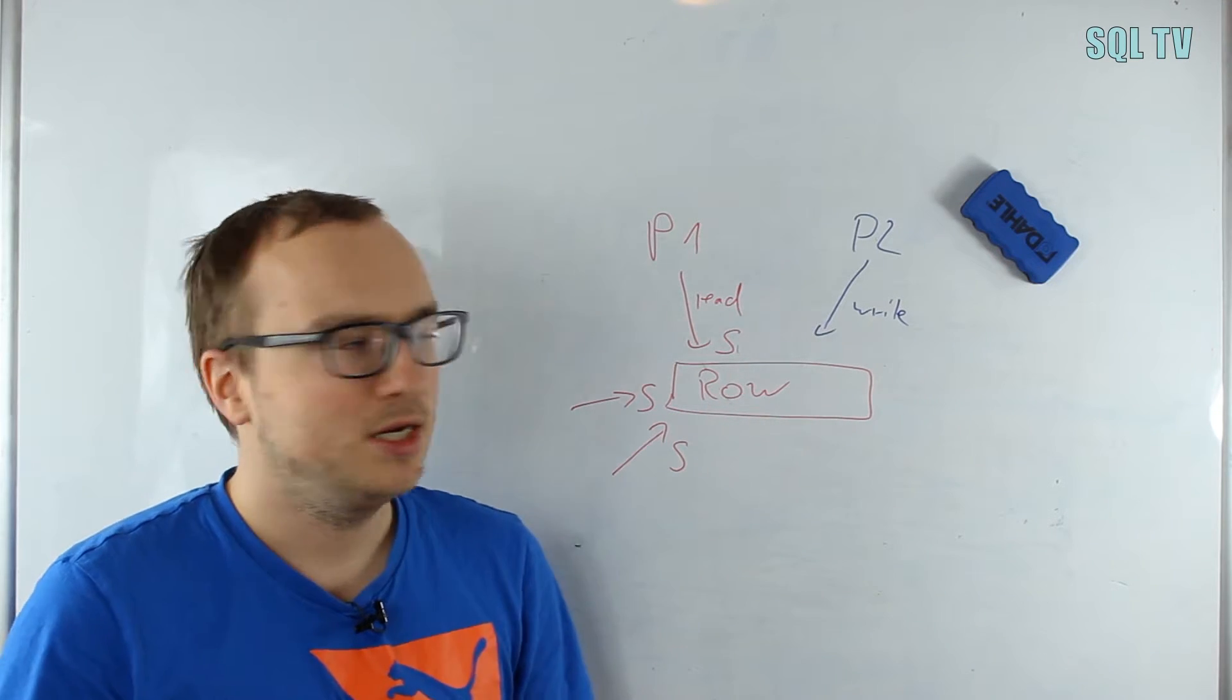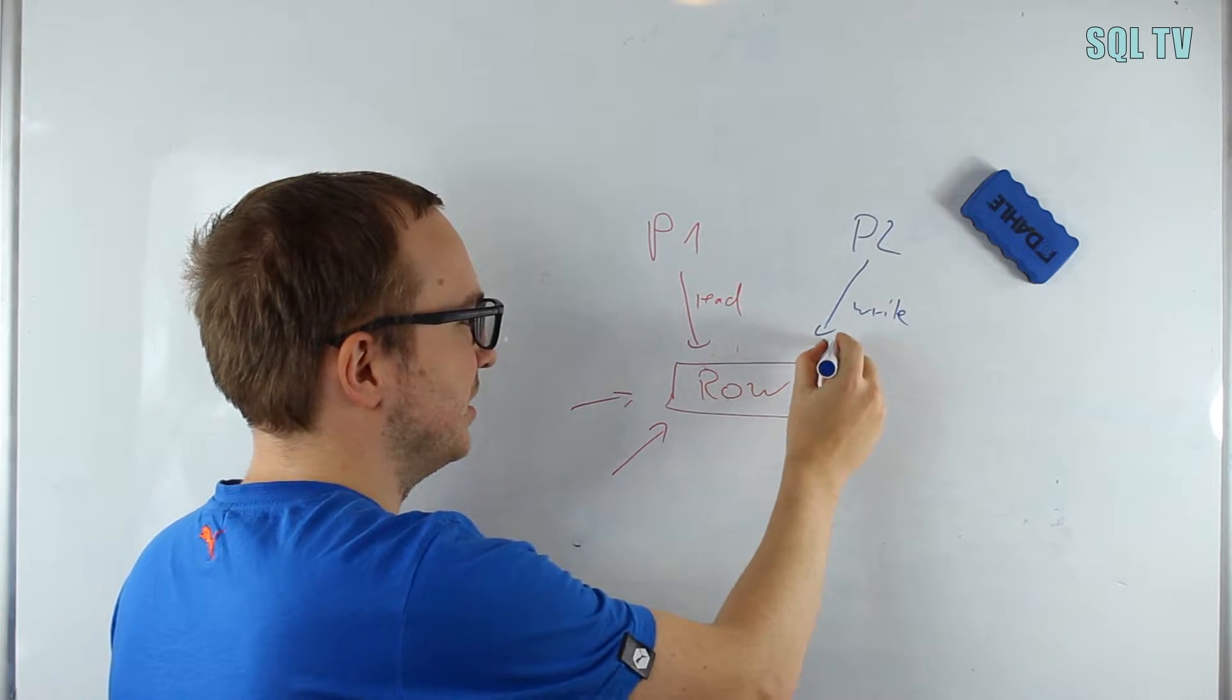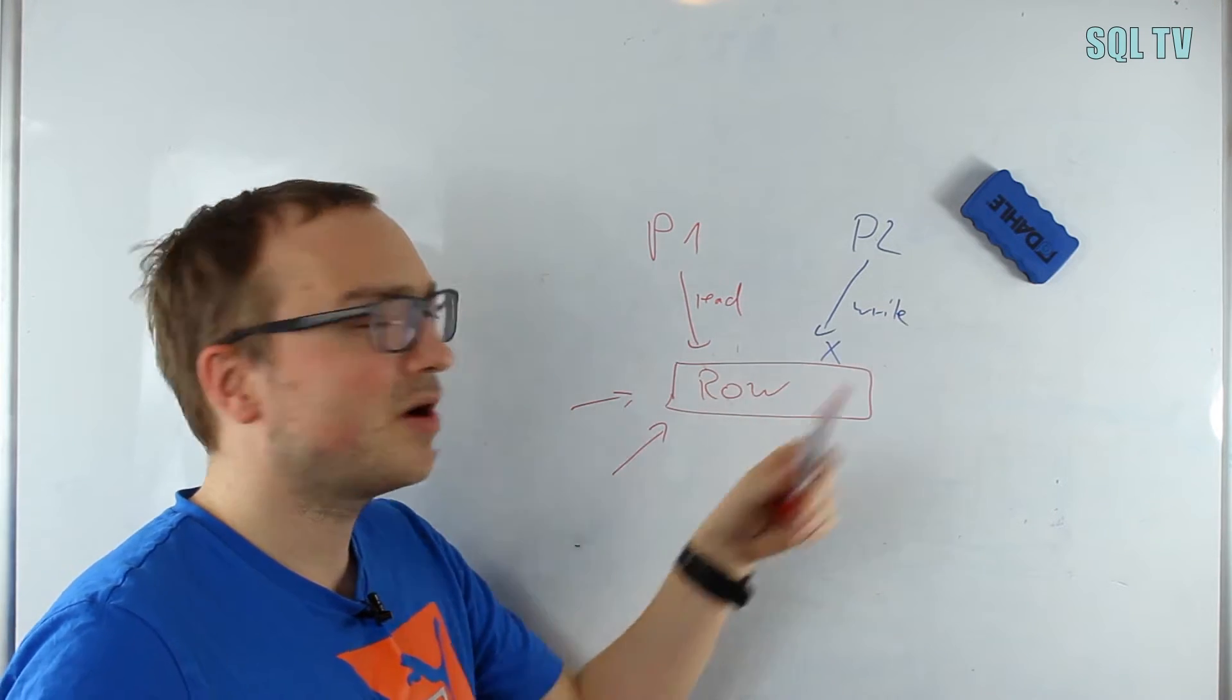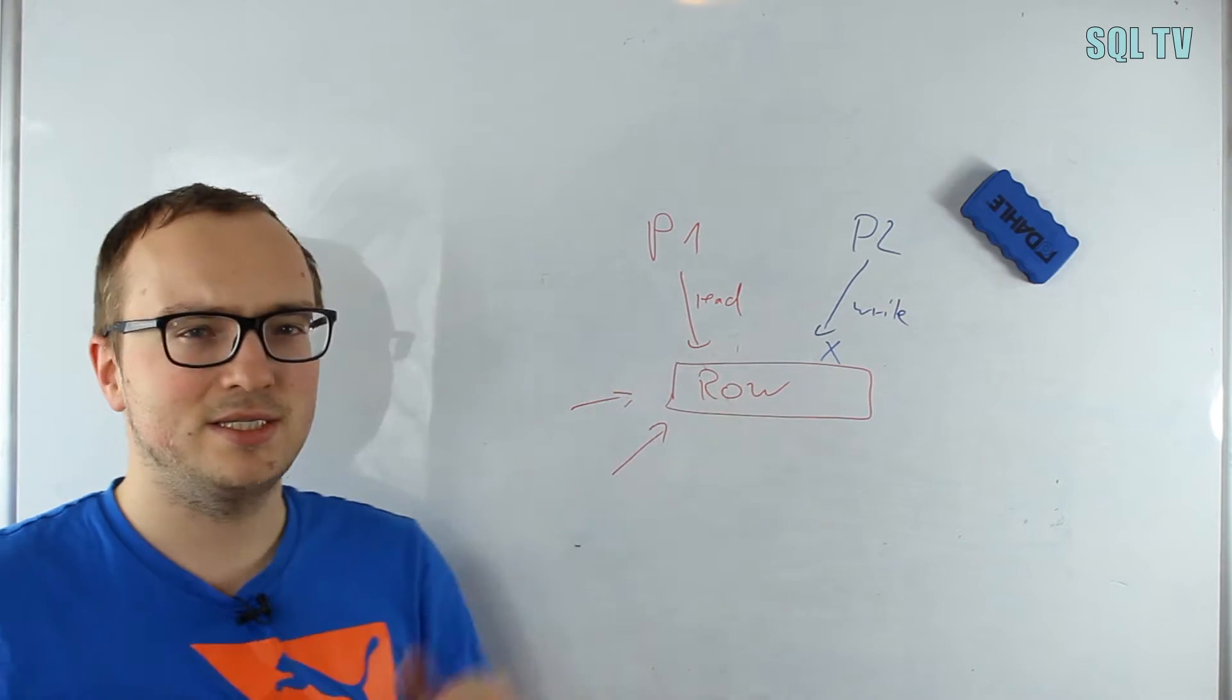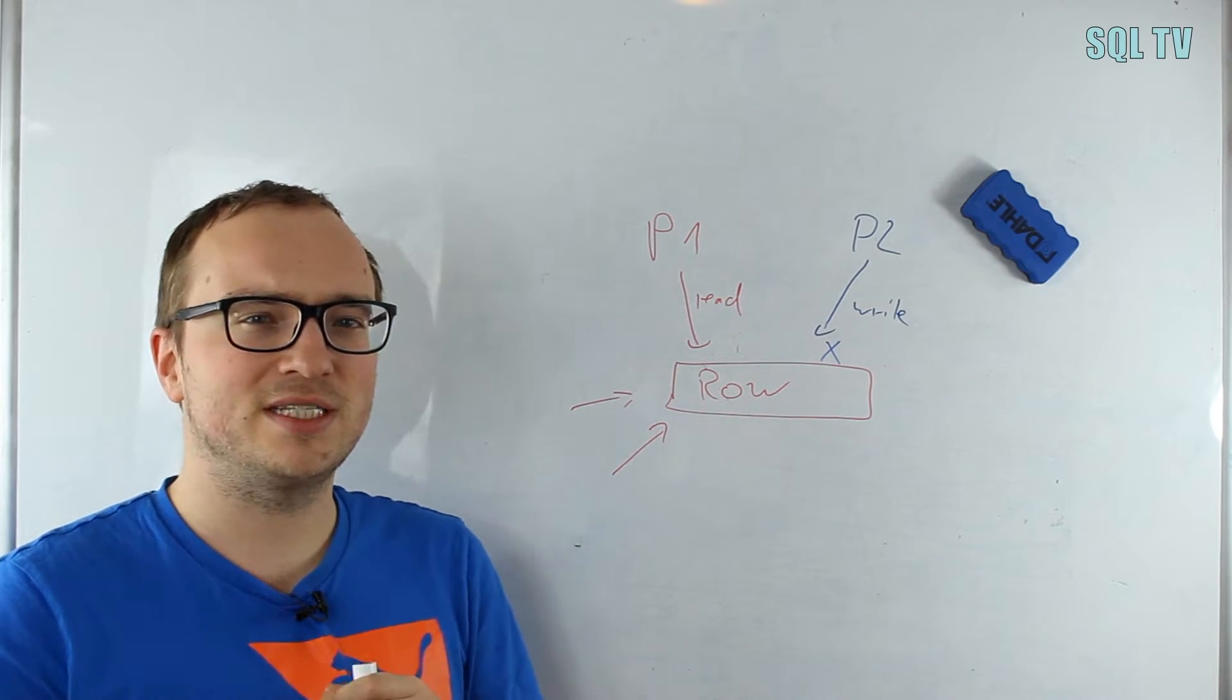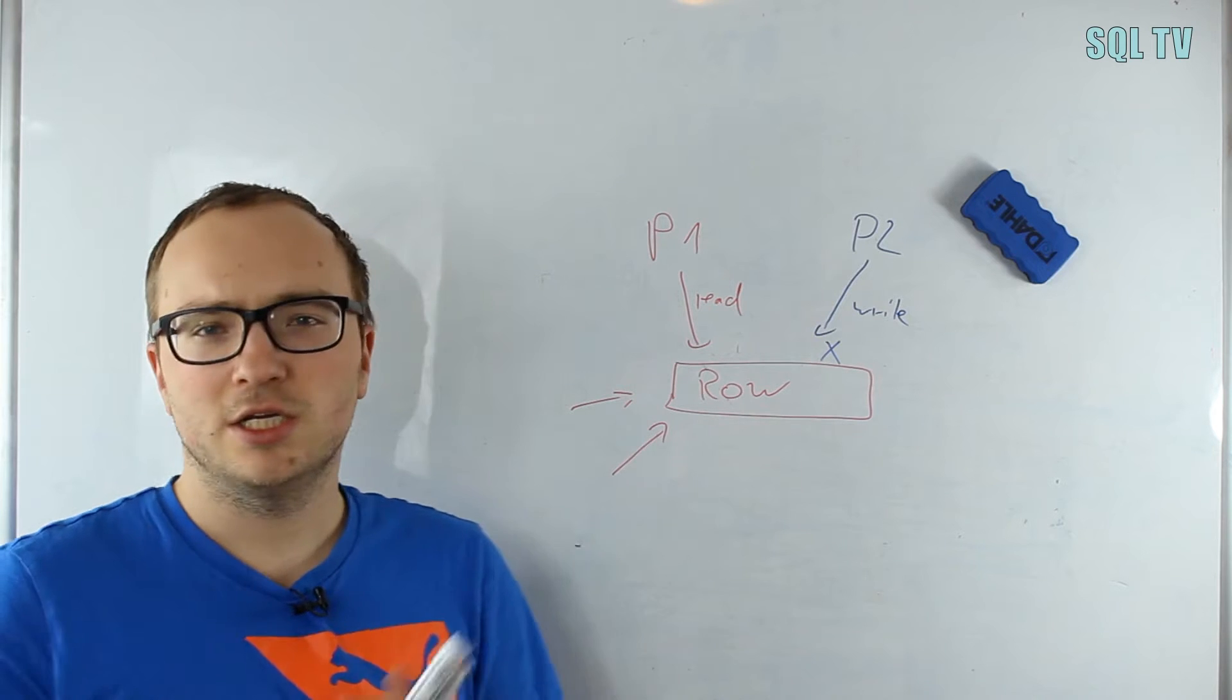Also the other way is possible, so that we have the writer that wants to write first, which obviously he can do, putting an exclusive lock on here. And then we have the reader coming and he can't put a shared lock on it, and also no other writer can put an exclusive lock. As you can see, the situation can be resolved like this, and this is the default behavior in SQL Server when you don't change anything on the transaction isolation levels. But obviously we are kind of serializing the processes—we manage the situation but at the cost of blocking and waiting.